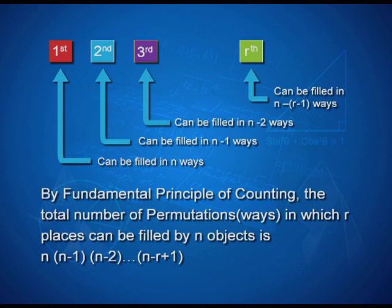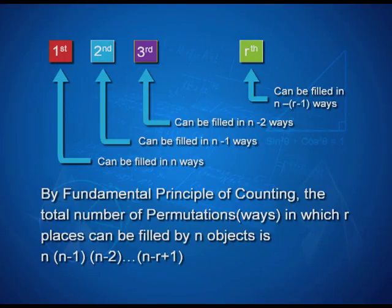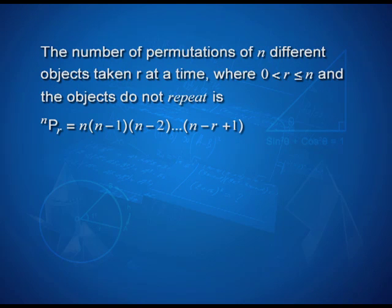Therefore, by the principle of counting — which says that if there are two or more events that can be done in m and n ways, then the number of ways they can be simultaneously done is m × n — the total number of permutations in which r places can be filled by n objects is the continuous product n × (n−1) × (n−2) × … × (n−r+1). This is what we define as nPr.